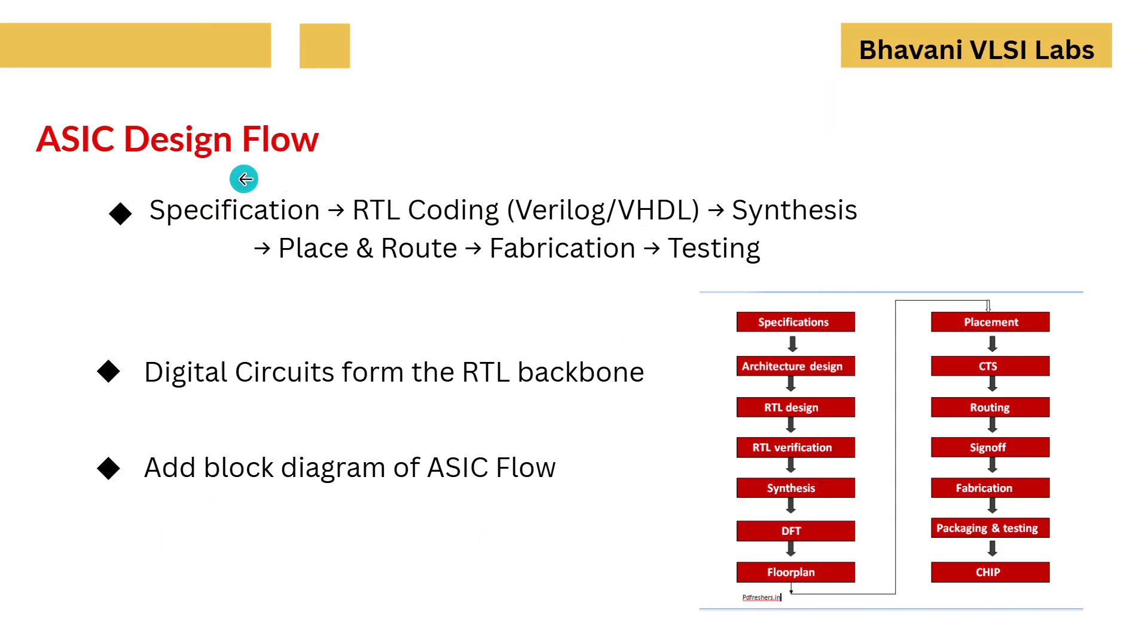ASIC Design Flow. Next let's look at the ASIC design flow. This is the step by step process followed in the semiconductor industry. We start with the specifications, then RTL coding in Verilog or VHDL, followed by synthesis, place and route, fabrication and finally testing.